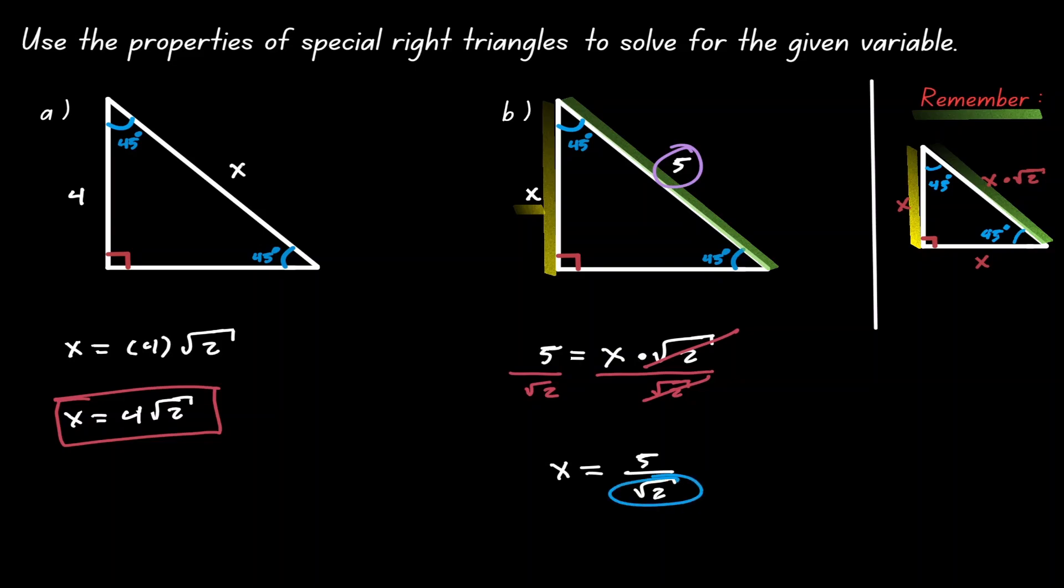We can consider this our solution, but there's a problem. We never want to leave a square root on the denominator. To rewrite this expression and not have a square root on the denominator, we're going to multiply by square root of two on the top and the bottom. And then we apply our rules of multiplication.